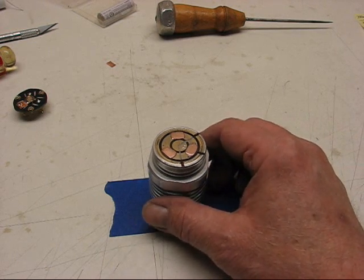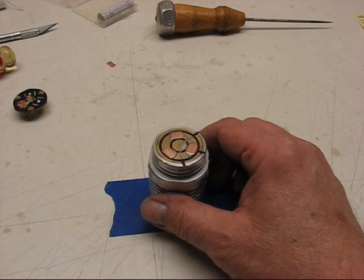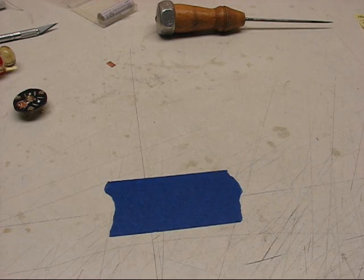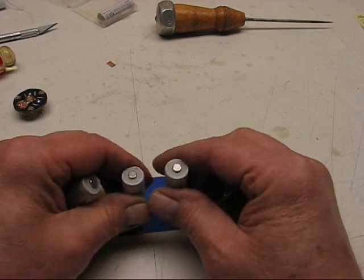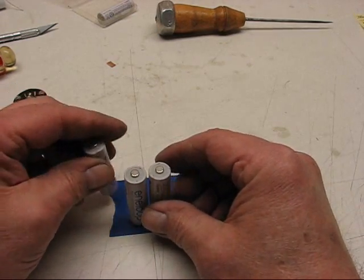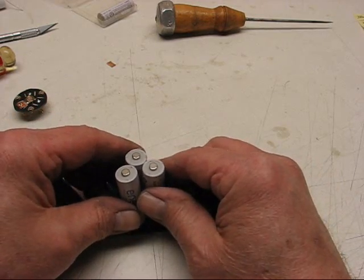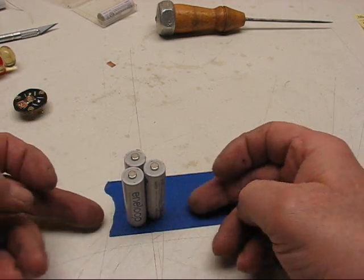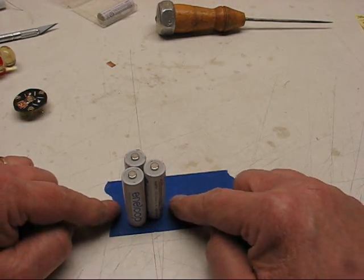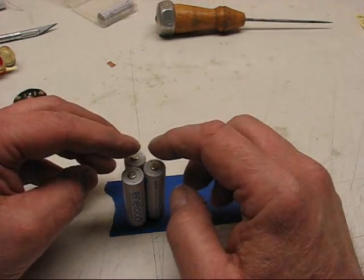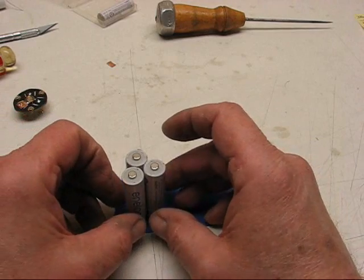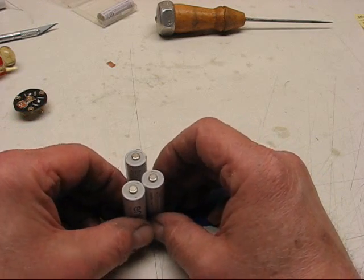I just want to quickly explain parallel to series in case there's anybody that's not really sure about it. Originally the Fandyfire was in parallel. All three batteries, the negatives were on the bottom, the positives were on the top.